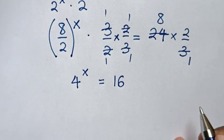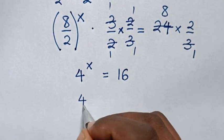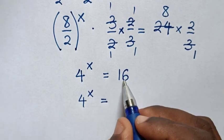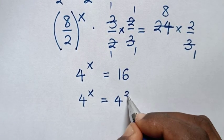Then in next step, it will be 4 power x is equal to... For this 16, to have base of 4, 16 is same as 4 square.